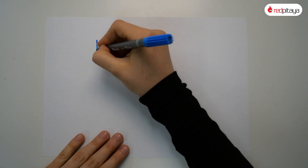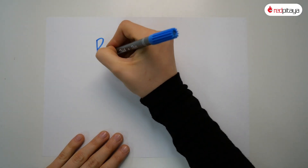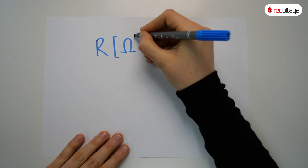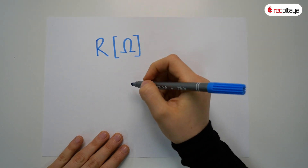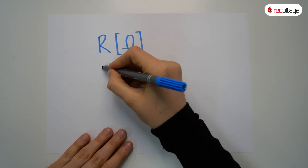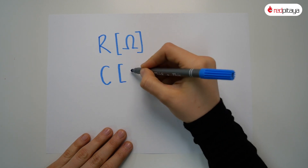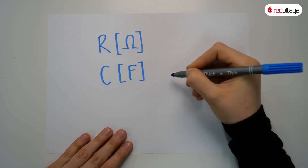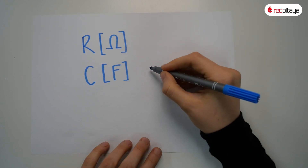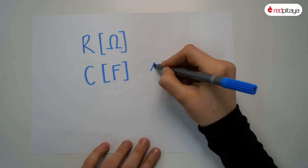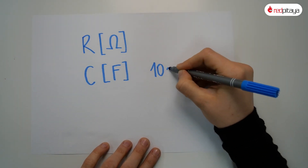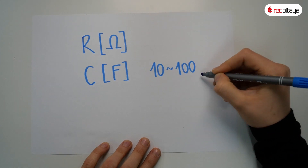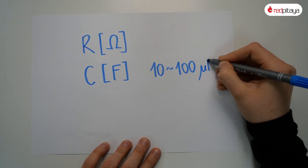Resistors have resistance, measured in ohms — one ohm is practically nothing. Capacitors have capacitance, measured in farads. One farad is a lot; even one millifarad is plenty. The biggest capacitors you'll commonly encounter are usually in the tens or hundreds of microfarads.